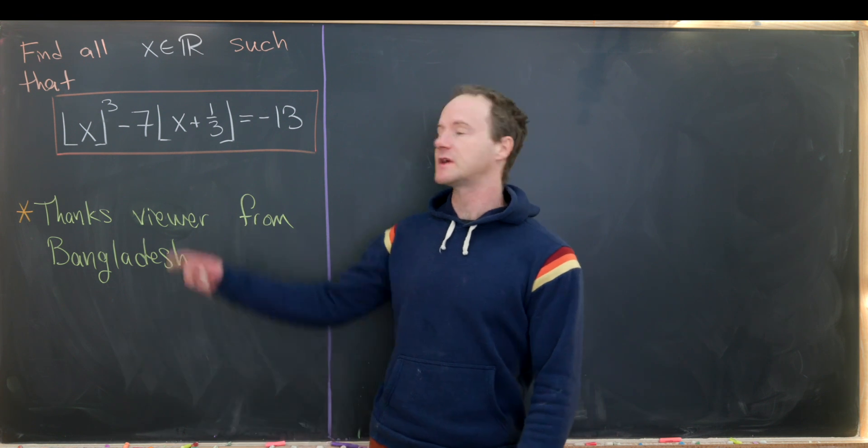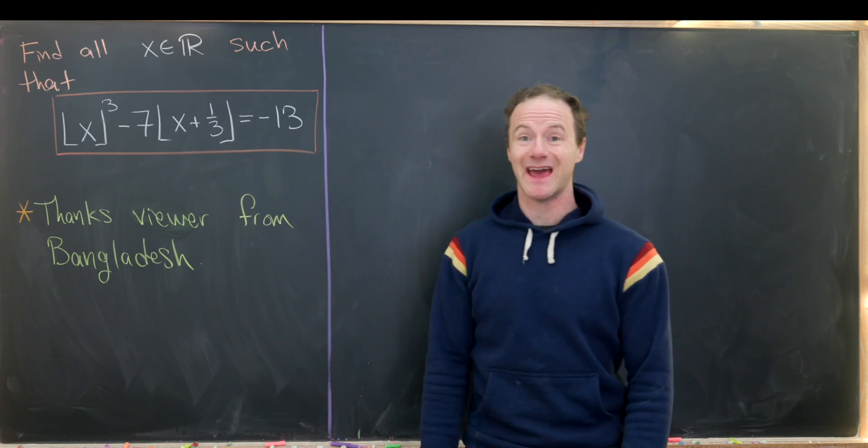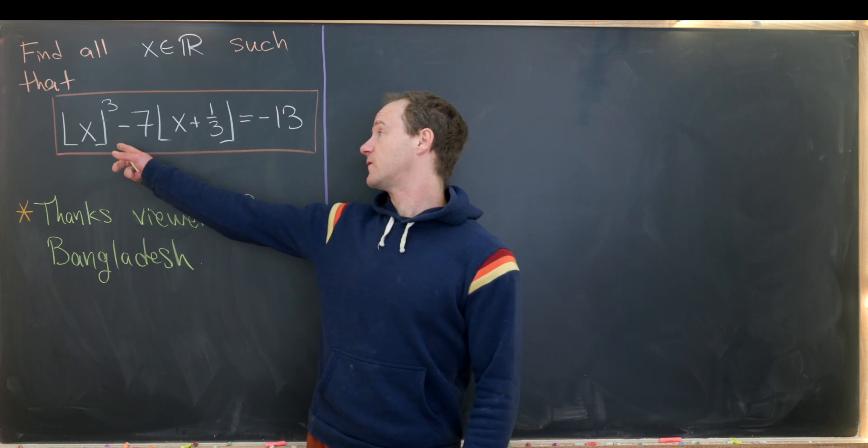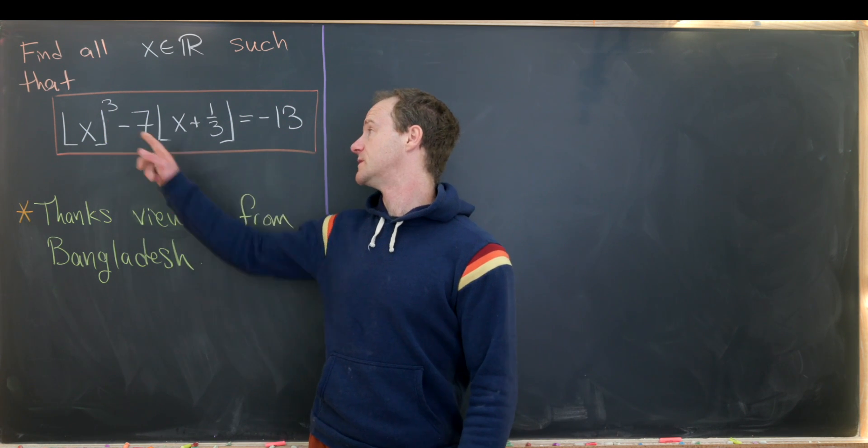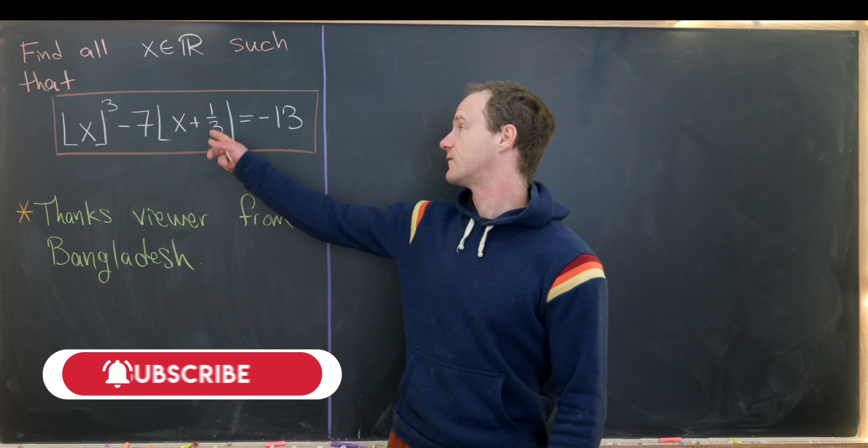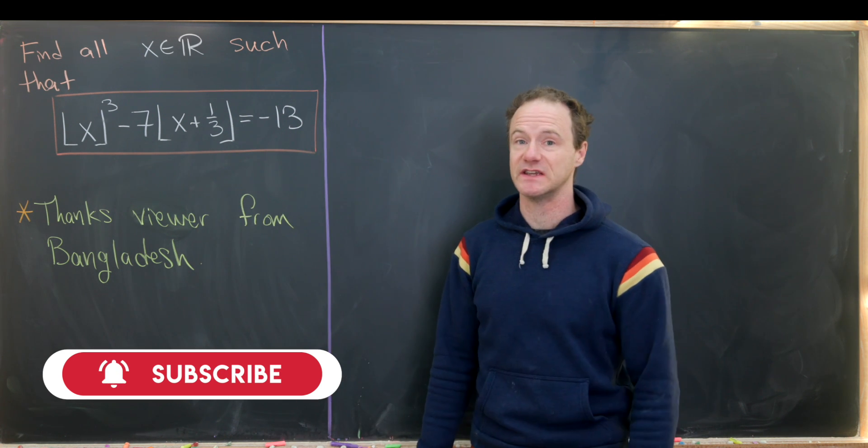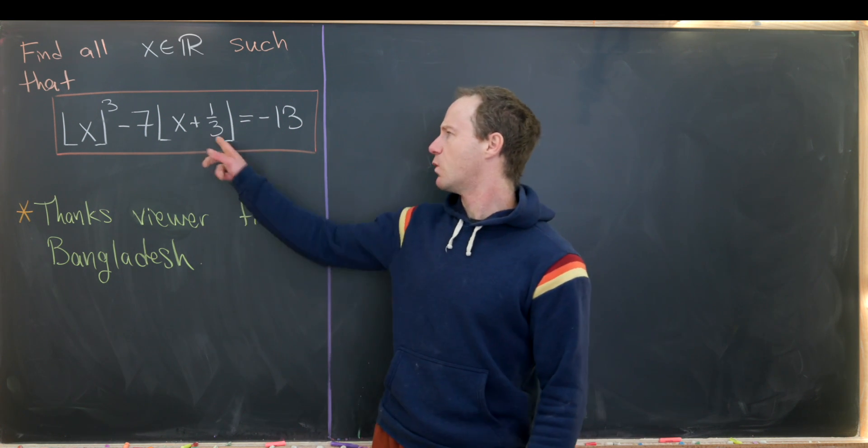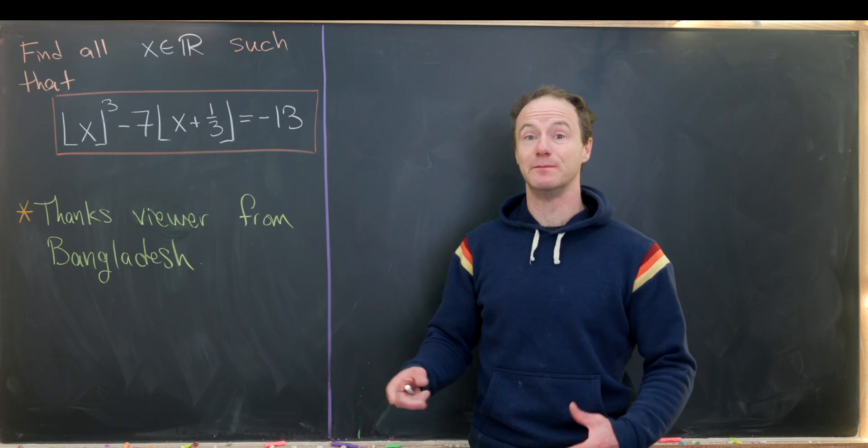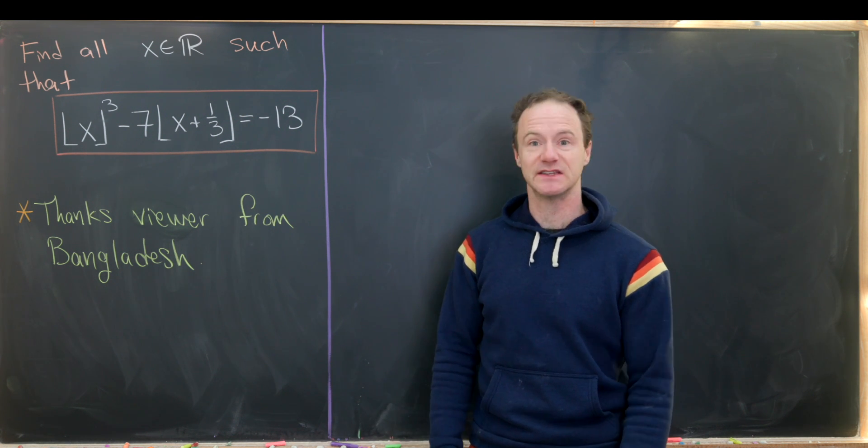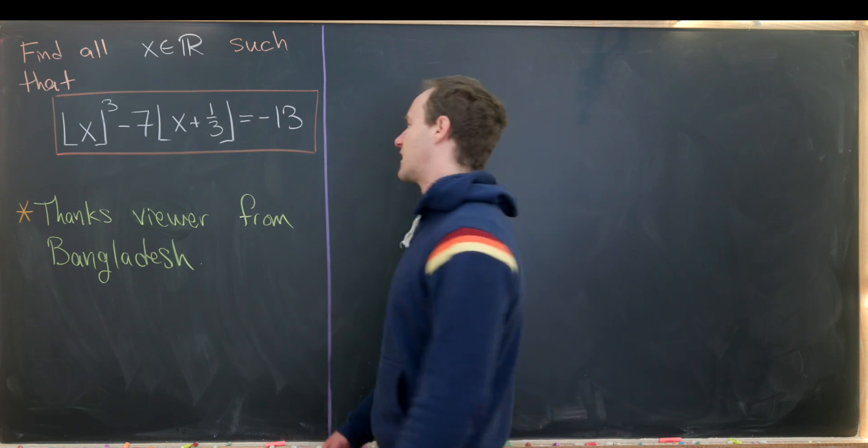So our goal here is to find all real numbers x satisfying this cubic equation. We have the floor of x cubed minus 7 times the floor of x plus one-third equals negative 13. And this plus one-third here is really giving us a big hint of how to break this naturally into cases. So let's maybe do that first.